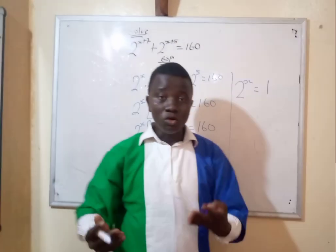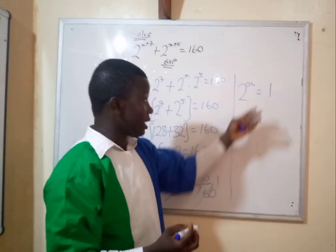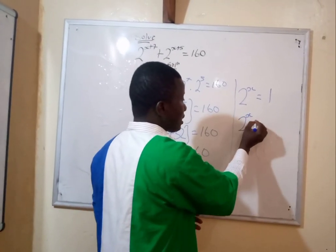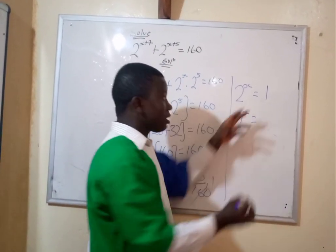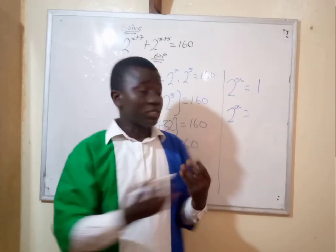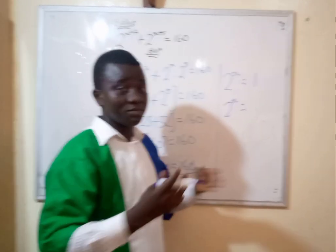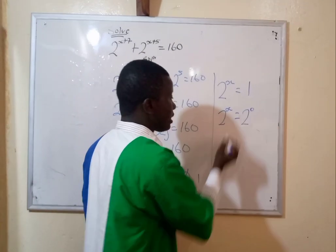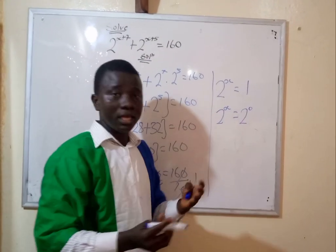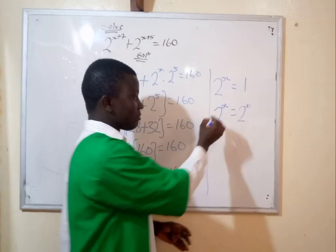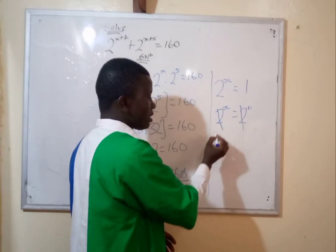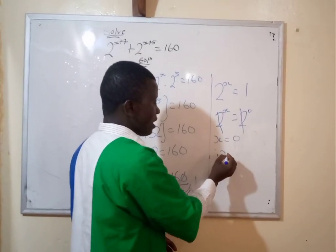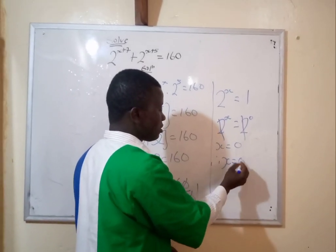You use the exponential rule and try to make the bases the same. So 2 to the power x equals 1, and 1 can be written as 2 raised to the power 0. The bases are now the same, so you cancel them. Therefore x equals 0.